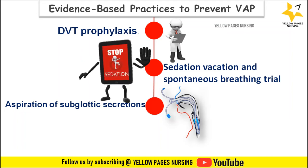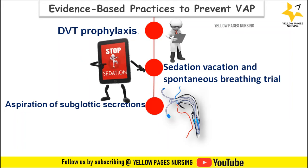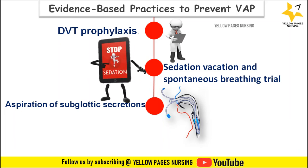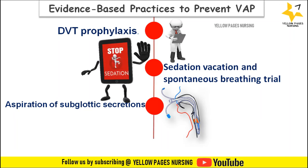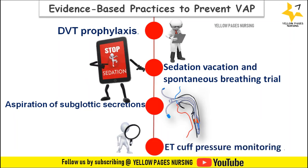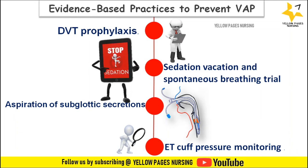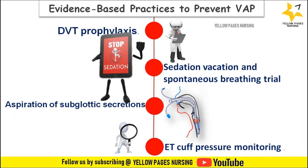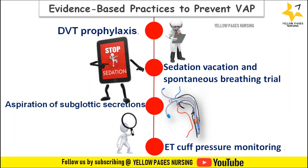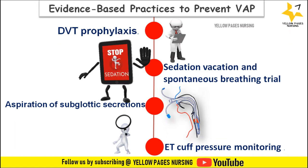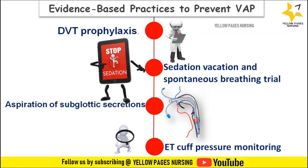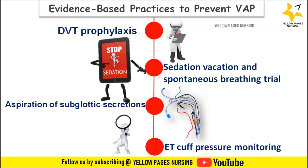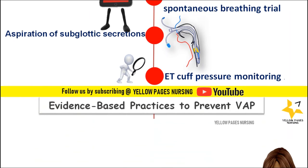The ET tube should have a subglottic secretions port so that secretions formed above the ET tube cuff can be easily removed. Next comes endotracheal tube cuff pressure monitoring. Normally, endotracheal tube cuff pressure should be maintained between 22 to 32 cmH₂O. It should be monitored frequently after suctioning, after positioning the patient, and after head or neck movements. If cuff pressure is not monitored frequently, secretions present above the ET tube cuff can slip down into the trachea.